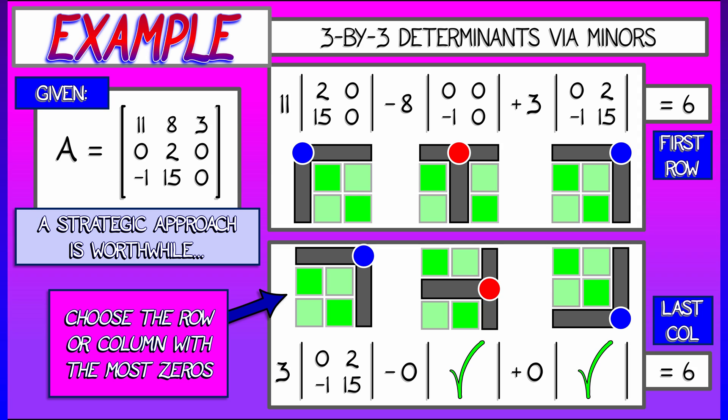So in general, you want to choose the row or the column that has a lot of zeros or really simple terms in order to make a determinant computation much easier.